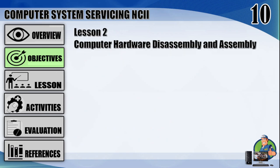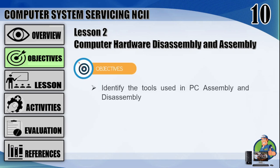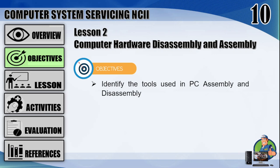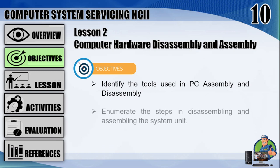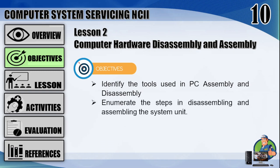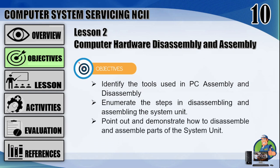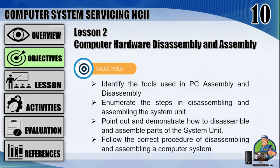Lesson 2: Computer Hardware Disassembly and Assembly. Objectives — at the end of the lesson, 80% of the students will be able to: Number 1, identify the tools used in PC assembly and disassembly. Number 2, enumerate the steps in disassembling and assembling the system unit. Number 3, point out and demonstrate how to disassemble and assemble parts of the system unit. Number 4, follow the correct procedure of disassembling and assembling a computer system.